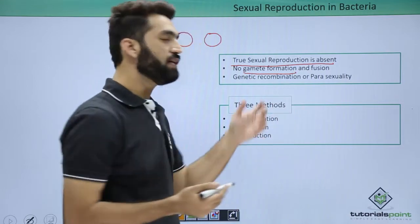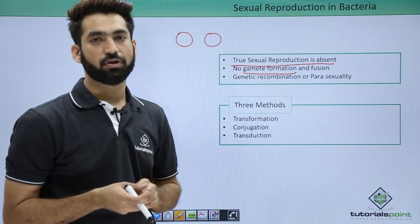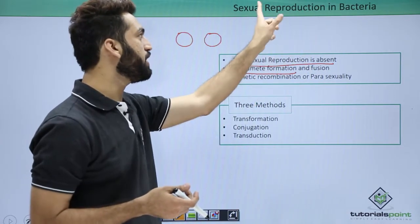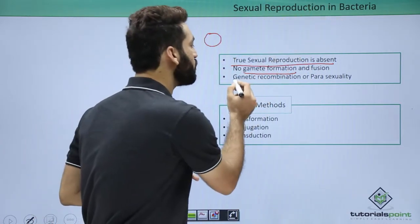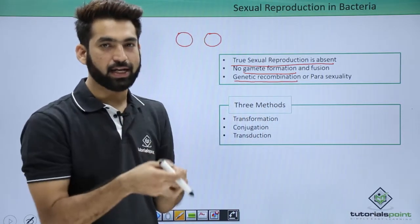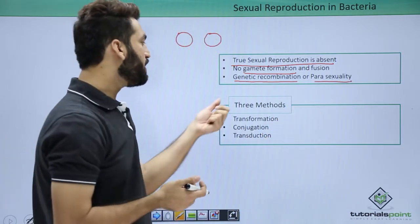When there is no gamete formation, true sexual reproduction is absent. Sexual reproduction in bacteria is also called genetic recombination, where the DNA actually recombines and forms a new product, which is also called parasexuality.